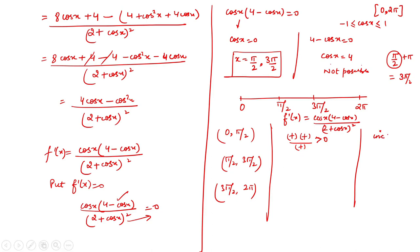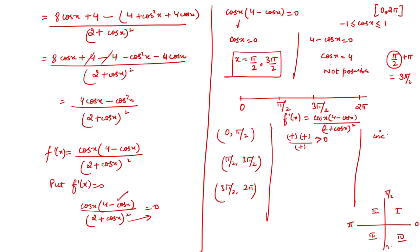In (π/2, 3π/2): this covers the second and third quadrants (90° to 270°), where cos x is negative. So f'(x) = (negative)(positive)/(positive) < 0 — the function is decreasing here. In (3π/2, 2π]: cos x is positive again, so f'(x) > 0 — the function is increasing in this interval.